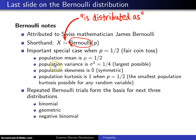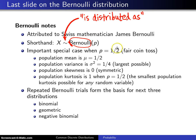The population variance sigma squared is one-fourth, and that is the largest possible population variance for the Bernoulli distribution. The population skewness will be zero — that makes sense, because when p equals one-half, you have a symmetric distribution.